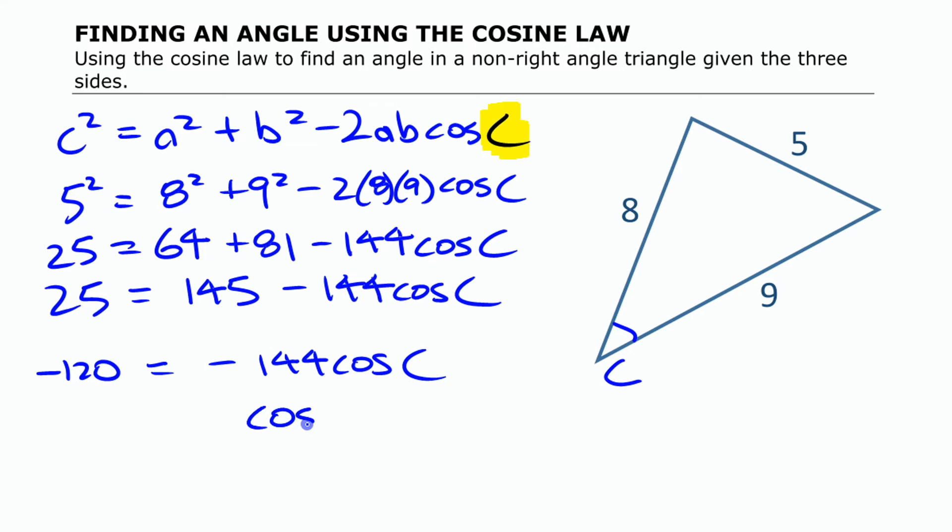Once you have done that, you end up with negative 120 over negative 144, or you could certainly simplify that. The two negatives are going to be a positive, so you're going to have, I'll just leave it as 120 over 144 for now. I won't actually divide out what that is because then I can leave this as an equal sign instead of approximately, but that's what cosine of C is.